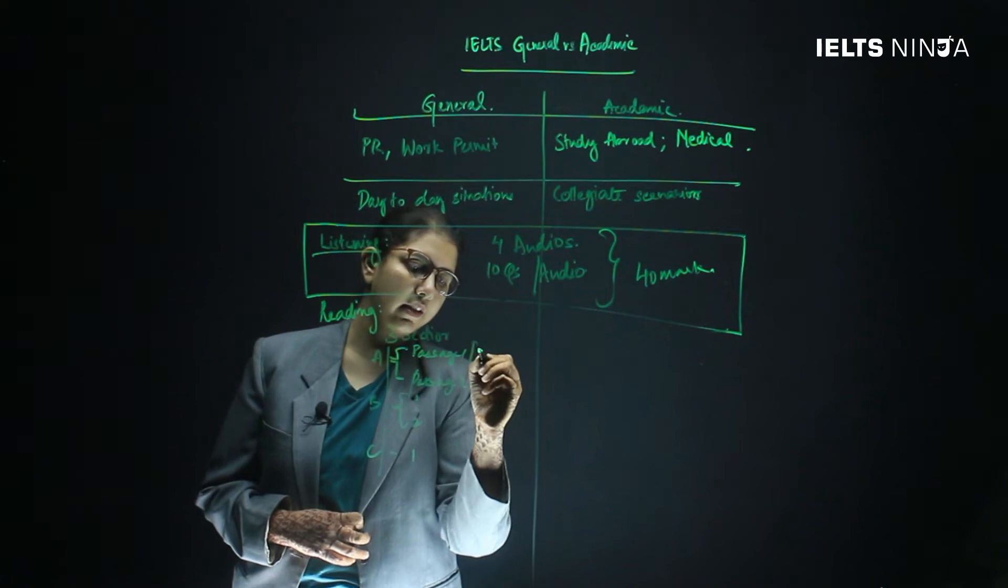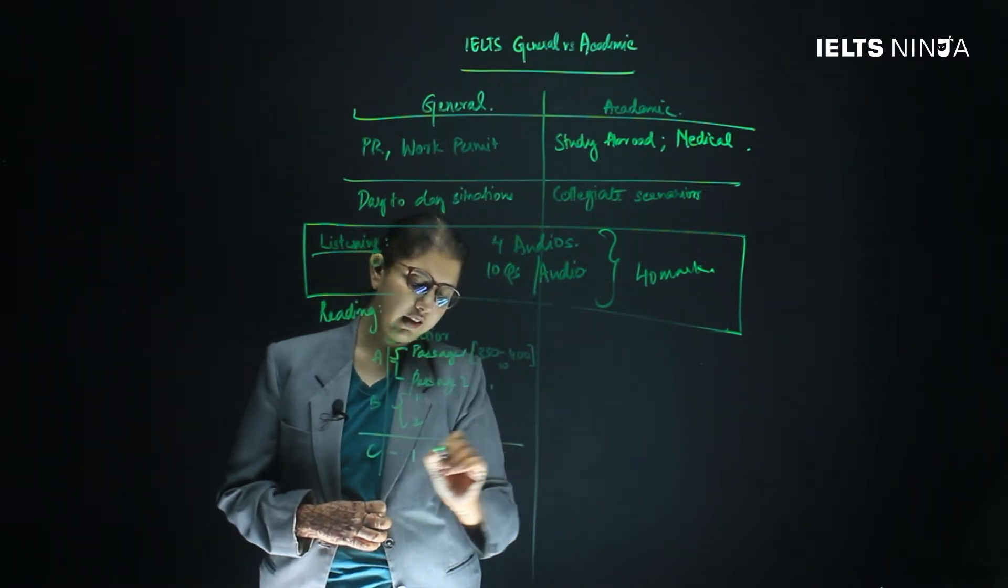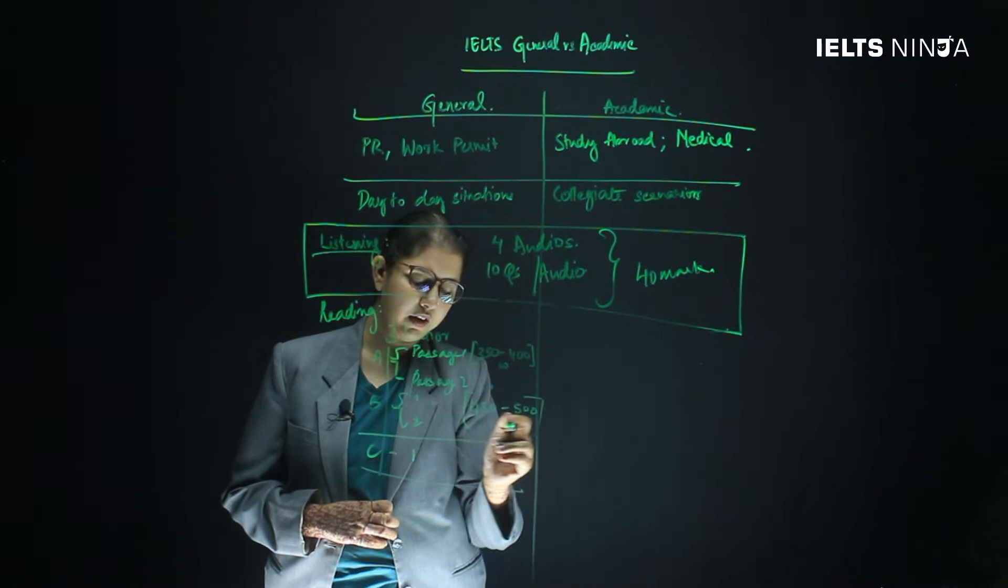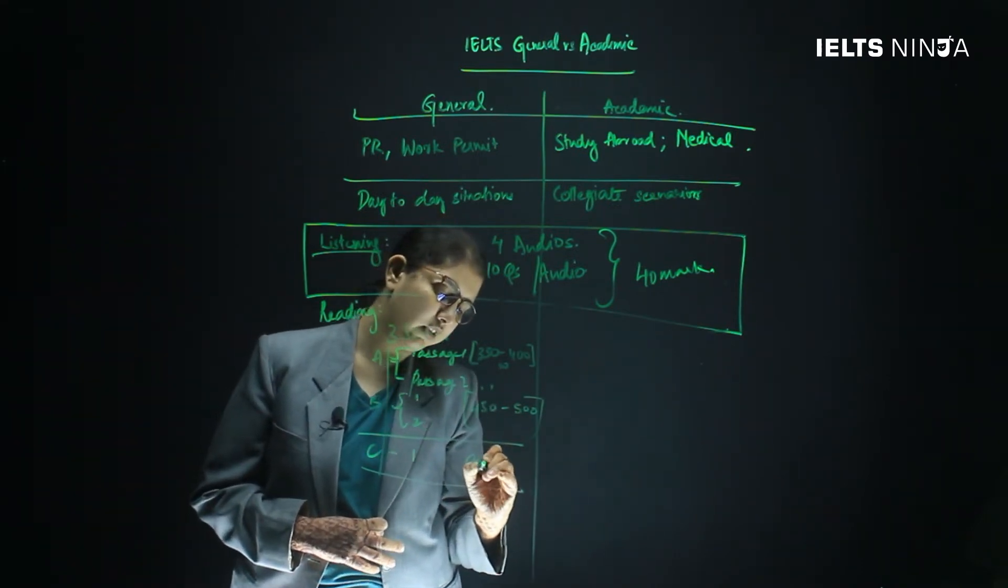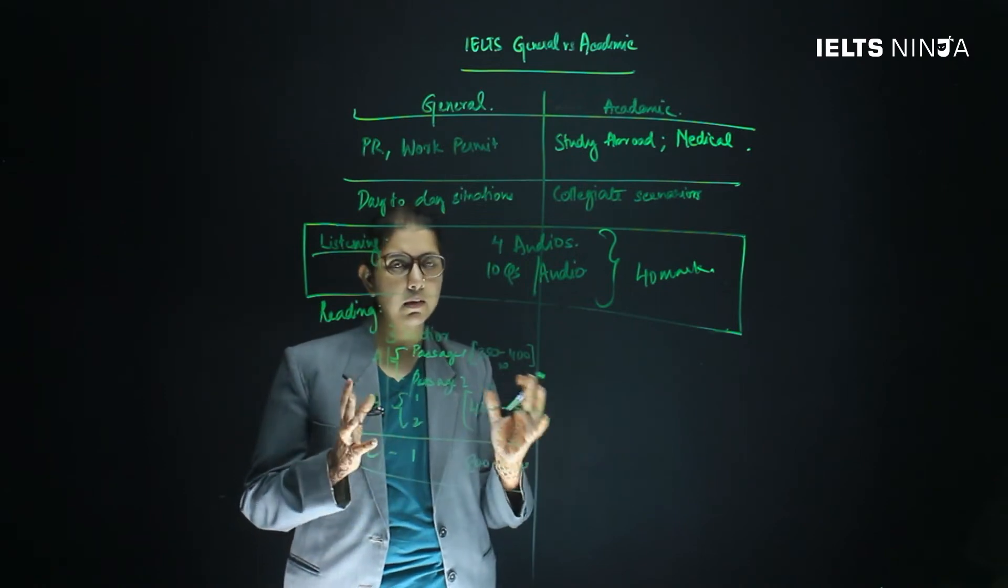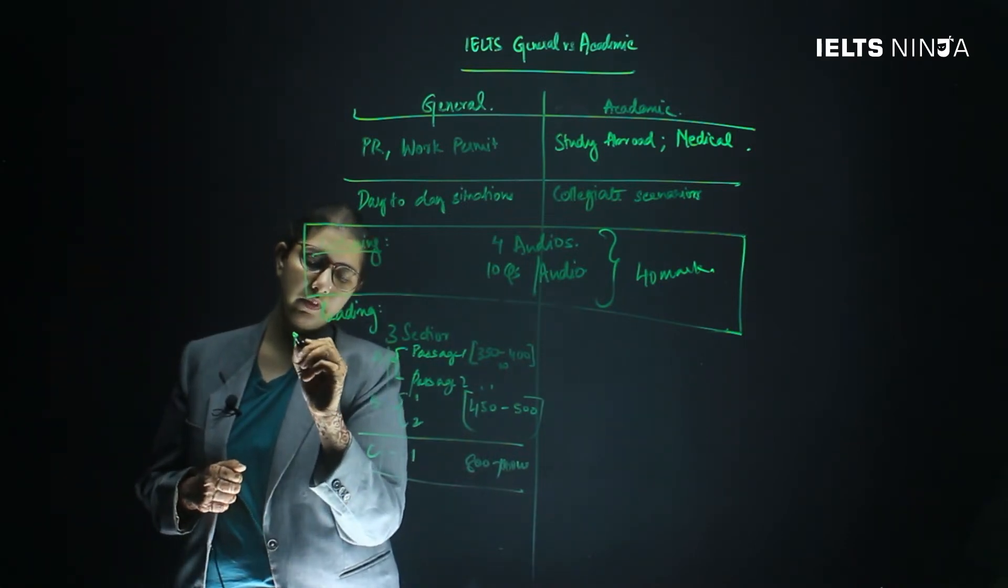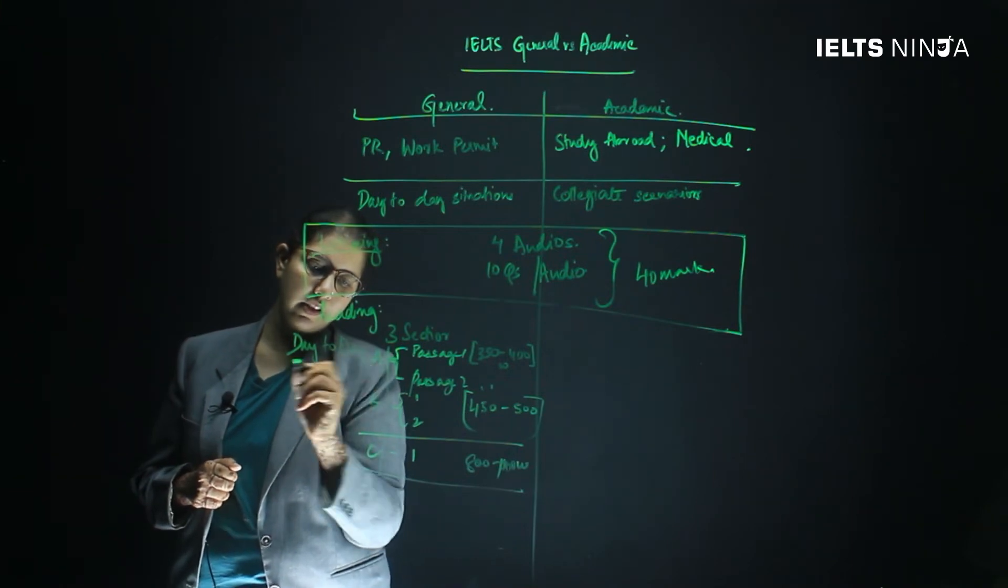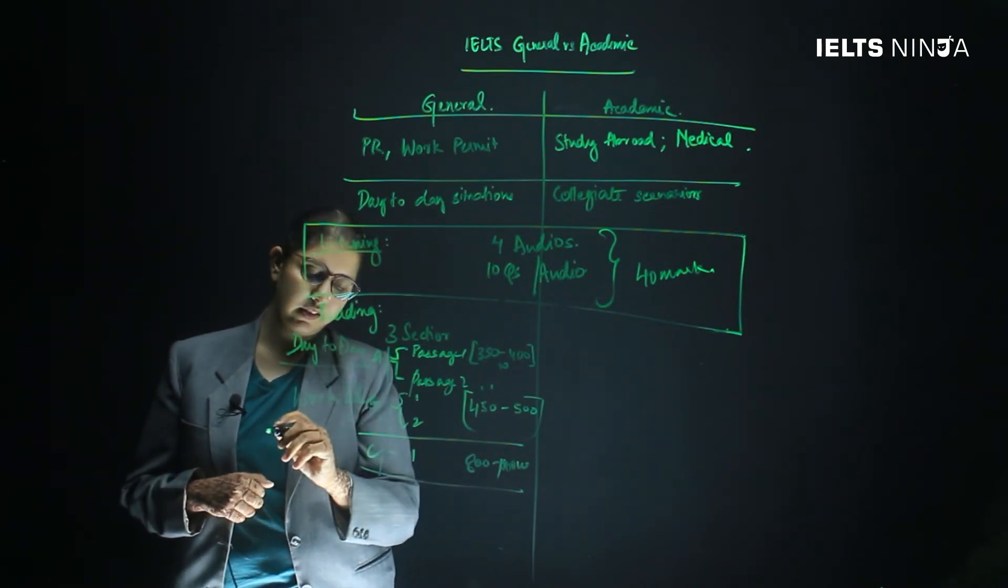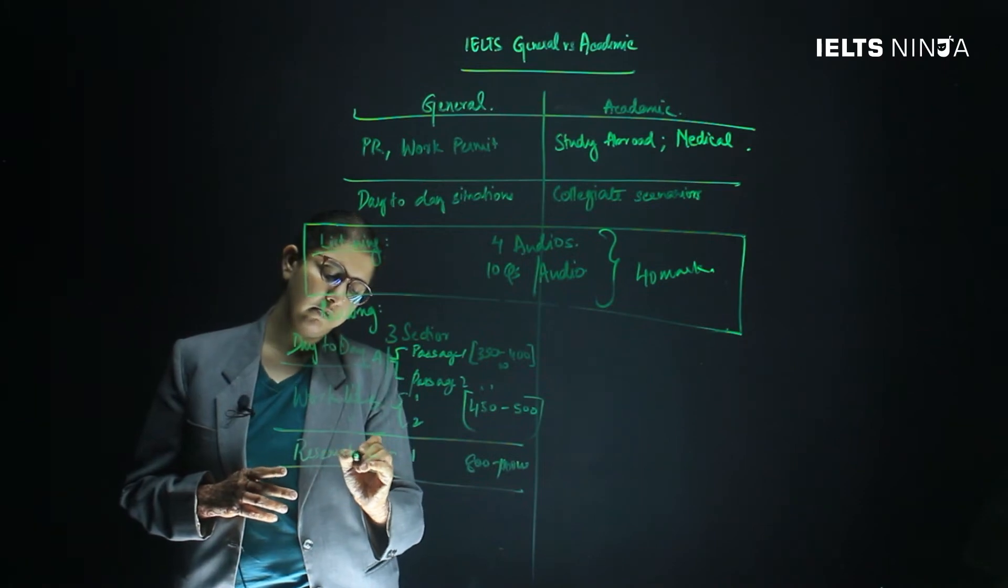Now passage 1 can be somewhere around 350 to 400 words. Whereas section B, the passages are going to be 400 to 500 words per passage. Section C is going to have 800 to 1000 words per passage. Now the types of passages themselves are also going to be different. In the general module, the scenario is going to be day-to-day experience, then focus on work-life scenarios, and the last section has a research-based article.